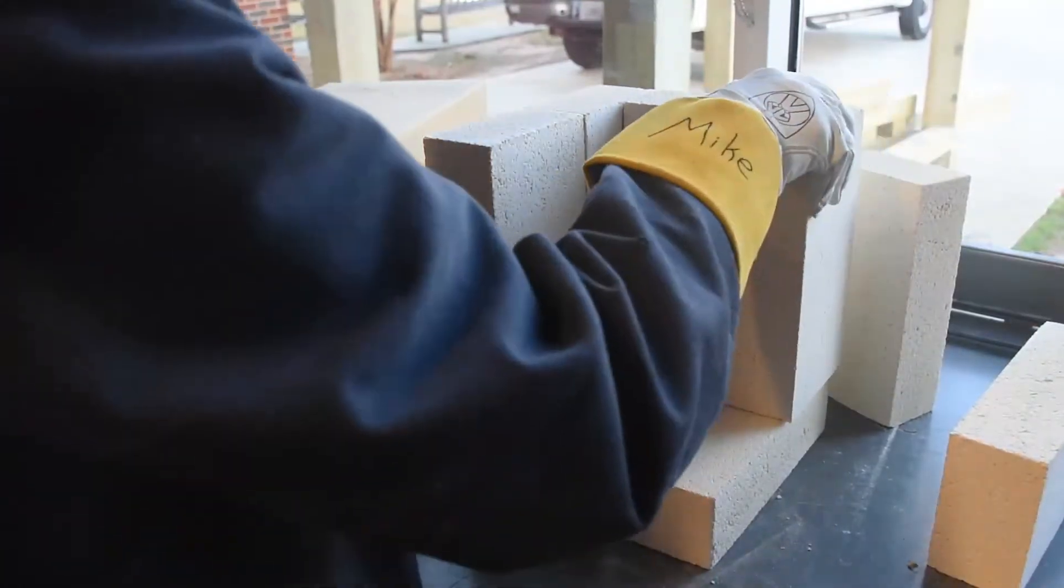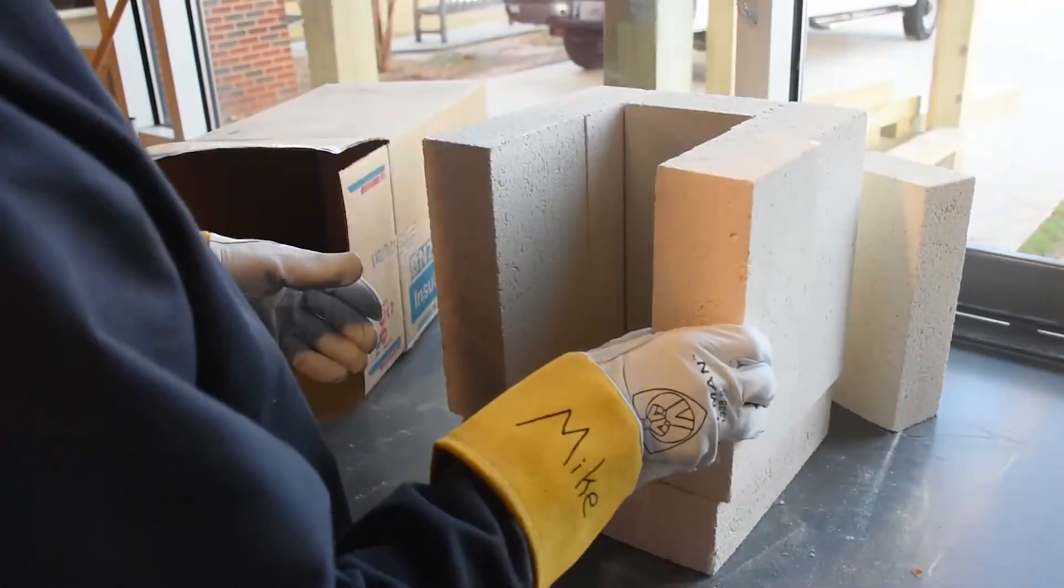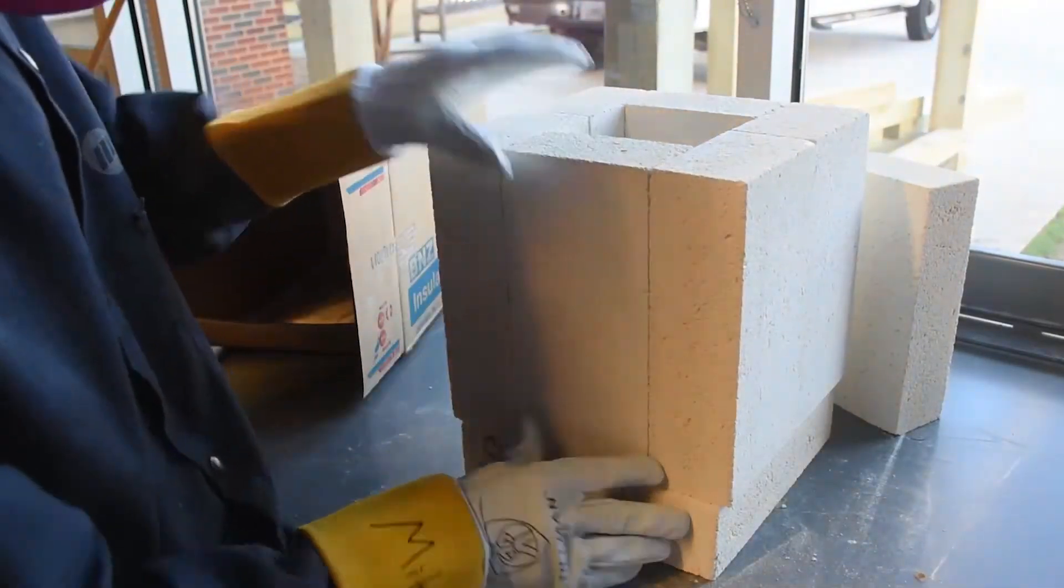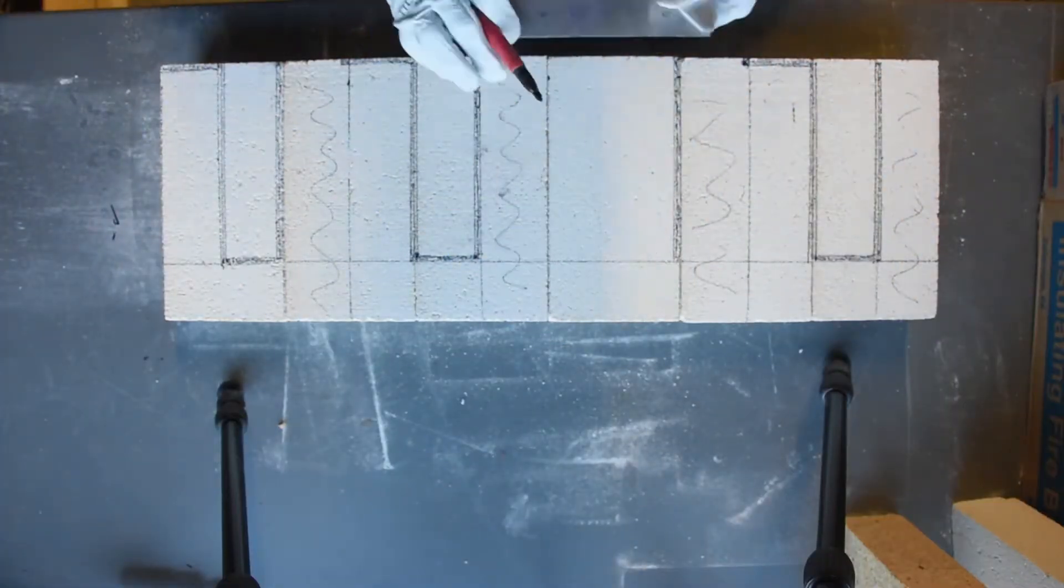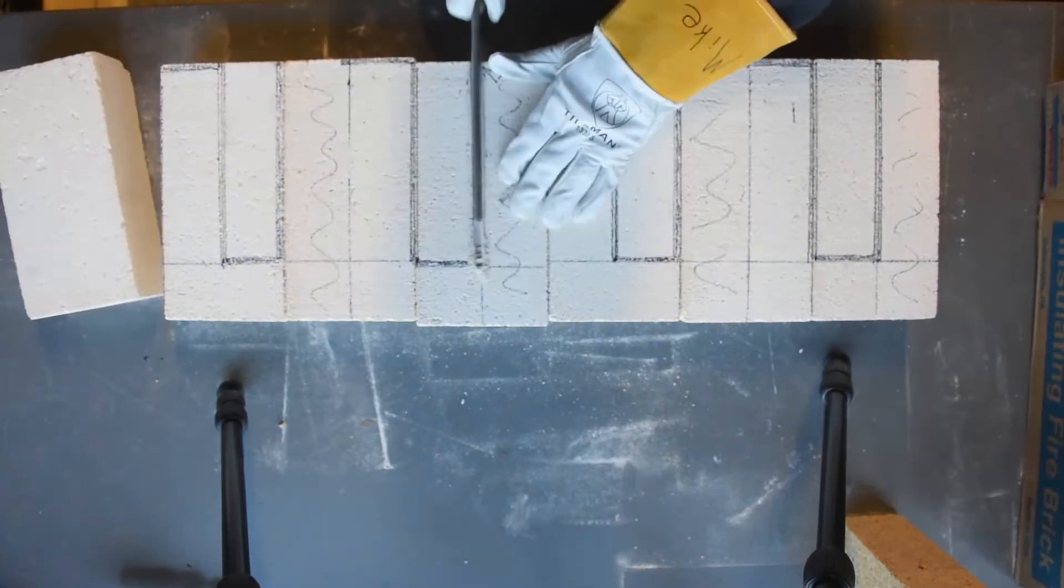I decided on a smaller one for this version and ended up only using 10 bricks. I also only use butt joints so I didn't have to cut any. I laid out my bricks and drew the lines for the coil grooves. It didn't take very long to gouge them out.